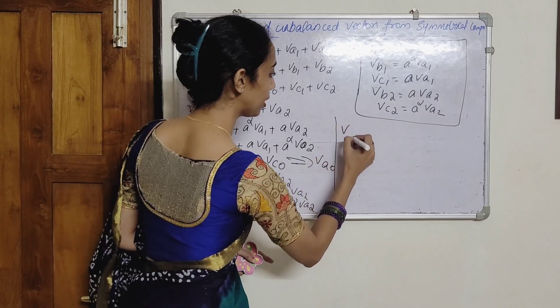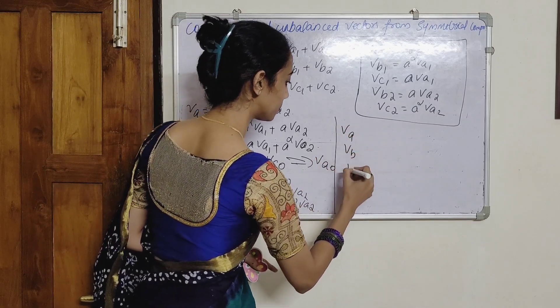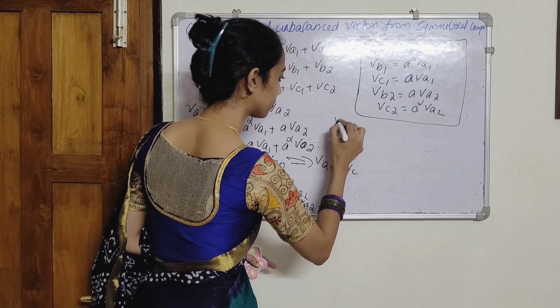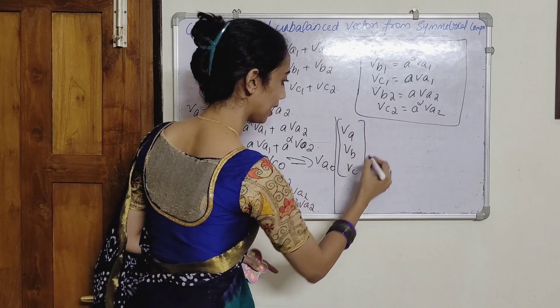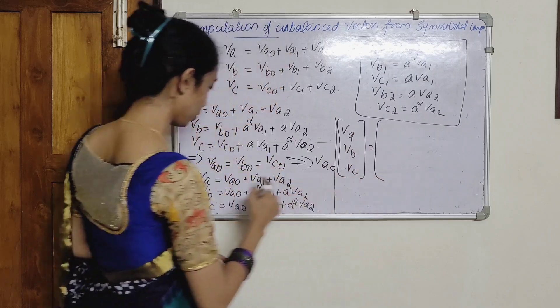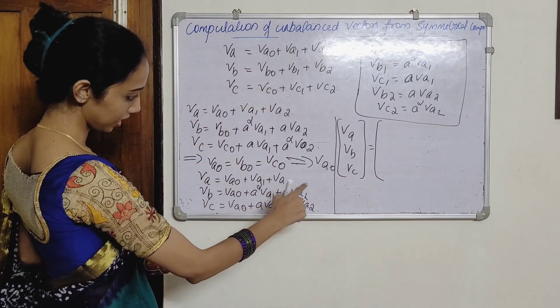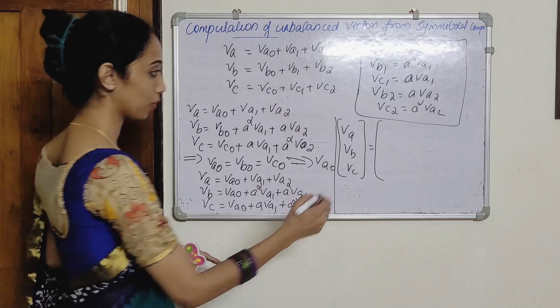Va, Vb, Vc form one matrix, which is equal to a matrix containing Va0, Va1, Va2.